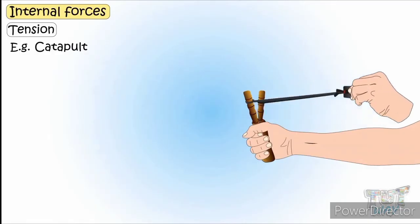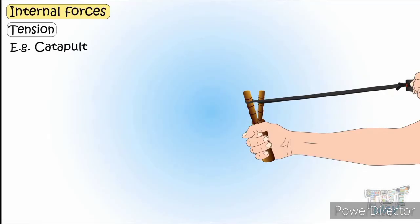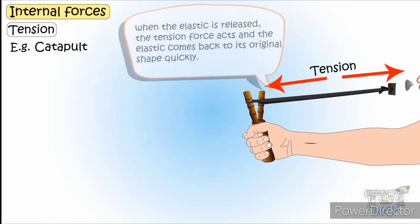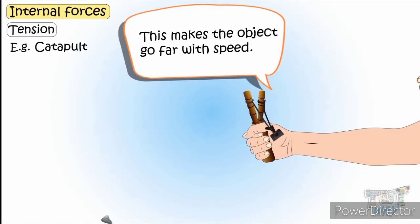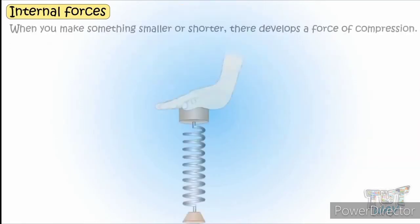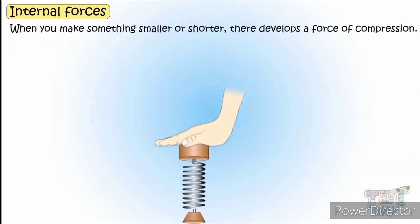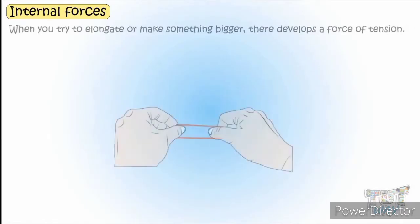A typical example is a catapult. When you put a stone in the catapult, you apply tension. The tension inside the rubber band prevents it from breaking. When you release the rubber band, the force pulls the stone forward and the stone moves, but the rubber band returns to its normal position because of its tension — the internal force that enables it to return.